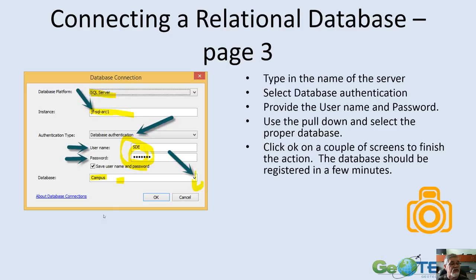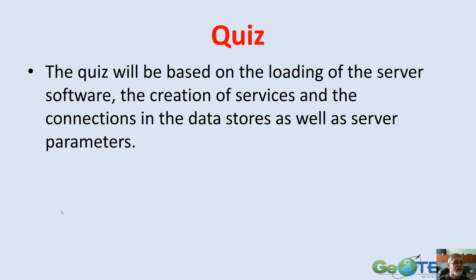The connection information should be provided by your instructor. Once that information is correct, the pull-down will work and provide a list of potential databases to connect to. The one I chose was 'campus' for this example. Take a snapshot of this to give to your instructor. Finally, at the end of all this information there will be a written quiz covering installing the software, creating services, creating connections to your data store and database server, as well as parameters you can set. Good luck connecting to your storage array and relational database.